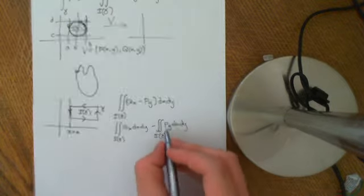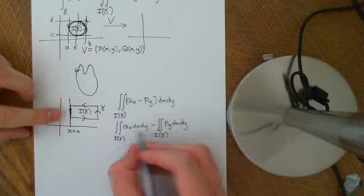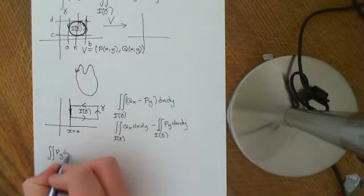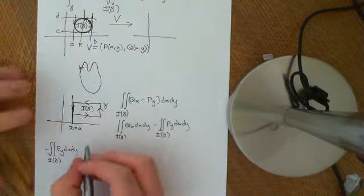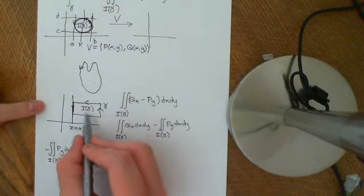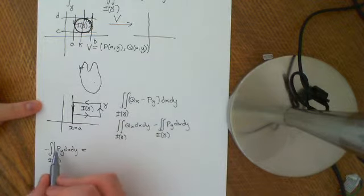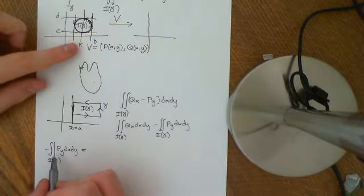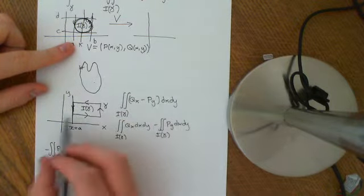We can think of these both as iterated integrals. Let's consider the double integral of py dx dy — remember it has this negative sign — over the inside of gamma. At every single point of the inside of gamma, you ascribe to that point the partial derivative of p with respect to y. Here p is the x-component of the vector field, varying with x and y position, so we can partially differentiate it and it's defined everywhere.